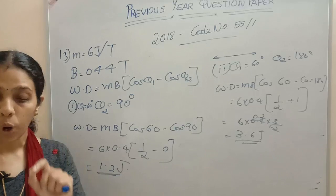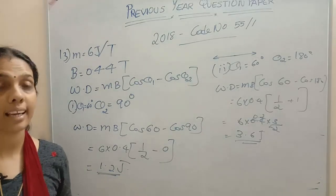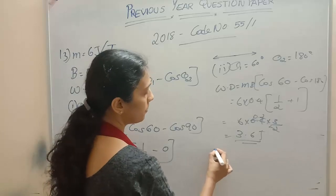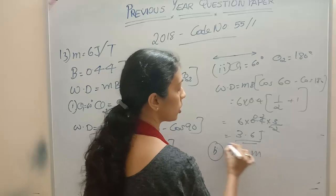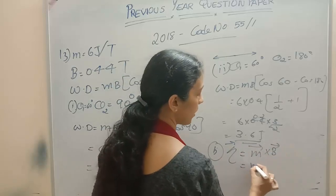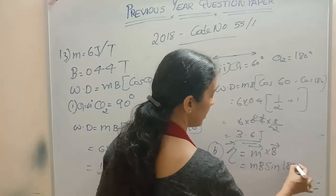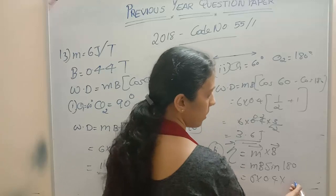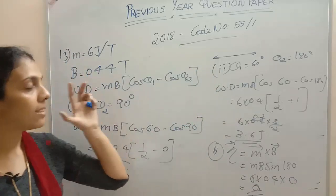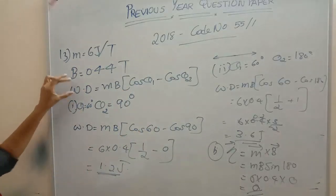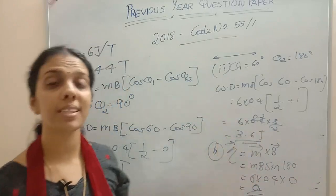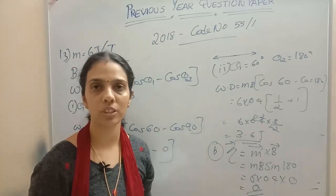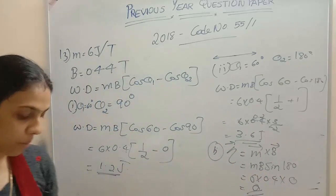Now, the torque on the magnet in the final orientation in case 2. In the final orientation it is 180 degrees. Torque equals M cross B = MB sin theta. Theta is 180, and sin 180 is 0. So the torque is 0. If it is anti-parallel, without solving you can write the torque as 0 — it is the minimum value.